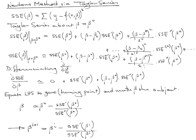We can differentiate with respect to beta. So the slope of the SSE equation is approximately equal to, well, this is a value, so differentiating it, we get 0.